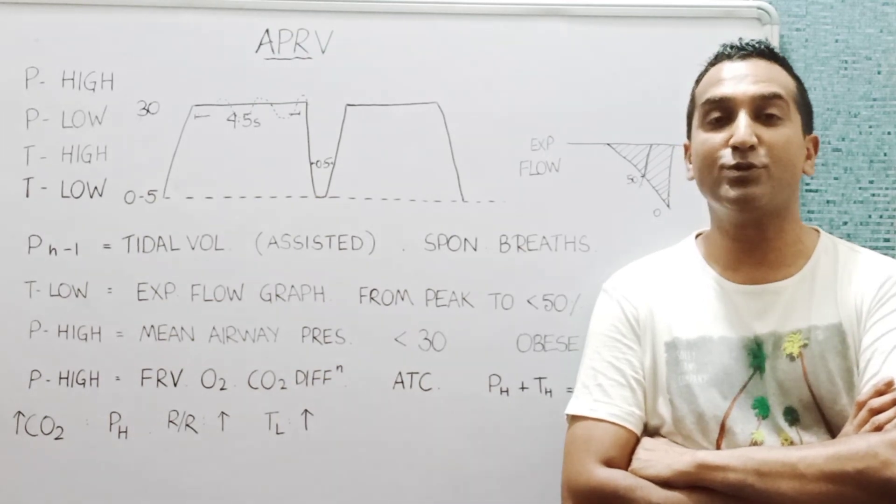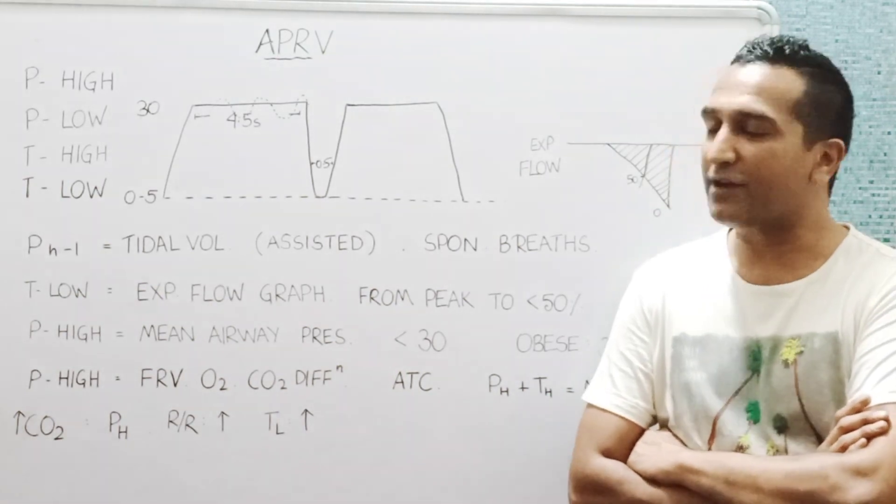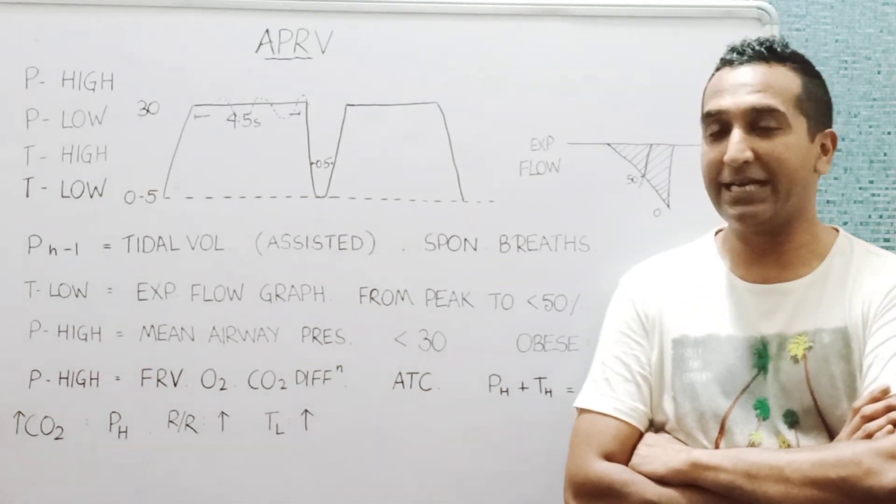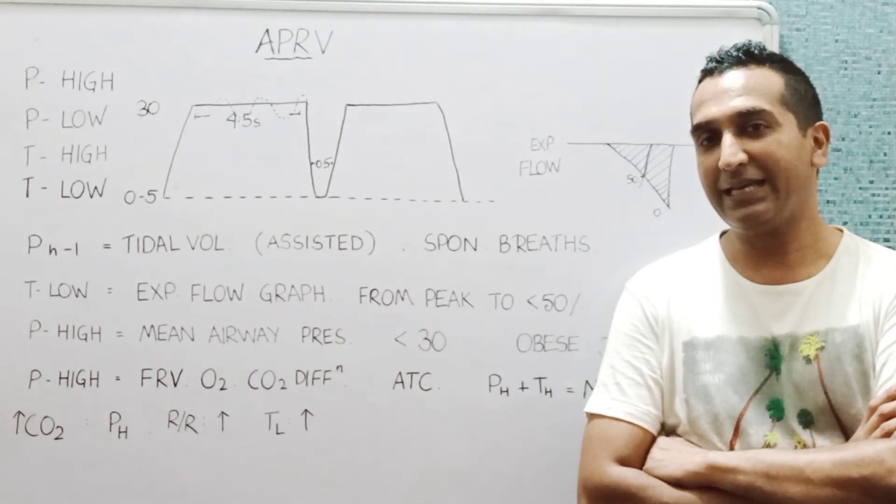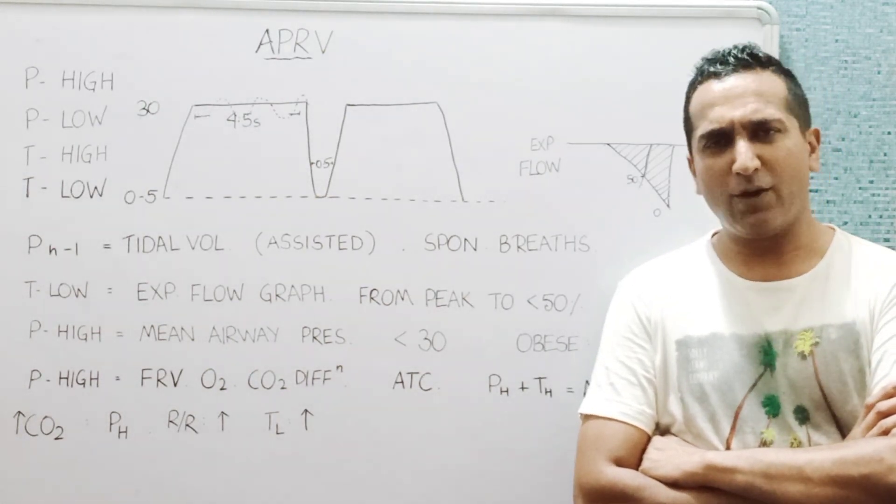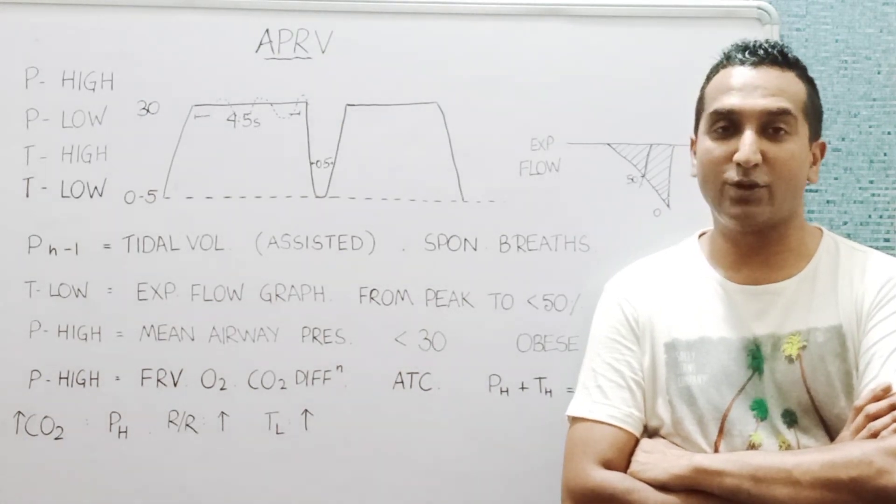When we set the APRV mode, we are asked four variables: two pressures, the high and the low, and two times, those spent at the high and the low pressures. We generally to begin with allow something like 10 to 14 releases per minute, so you can also call them 10 to 14 breaths per minute.